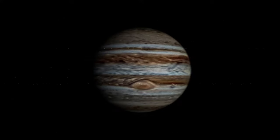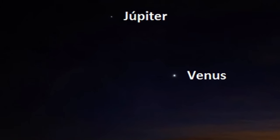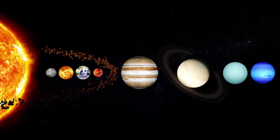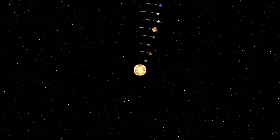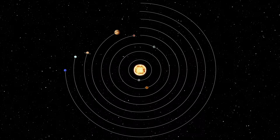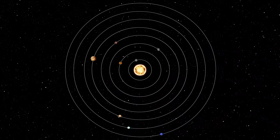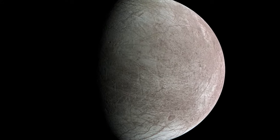Jupiter is important for many reasons. First, it is one of the brightest planets in the night sky, making it easily visible to the naked eye. It is also a very old planet that has existed since the early days of the solar system. Jupiter has a significant impact on the dynamics of the solar system due to its enormous mass and gravitational force. Perhaps most excitingly, it is a key planet in the search for extraterrestrial life — Jupiter's moon Europa is believed to have a subterranean ocean of liquid water, making it a promising candidate for hosting life.